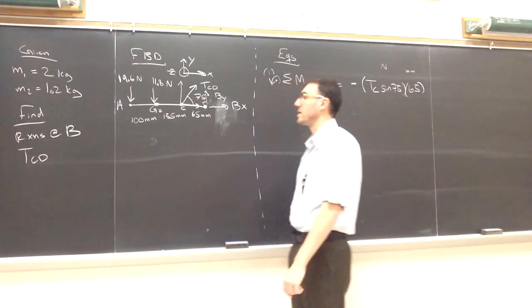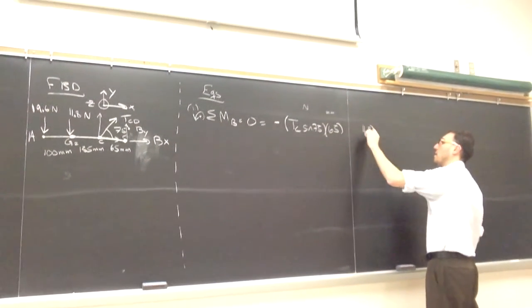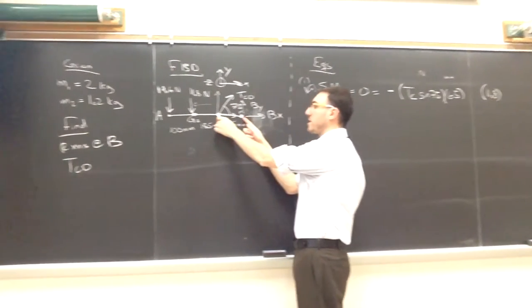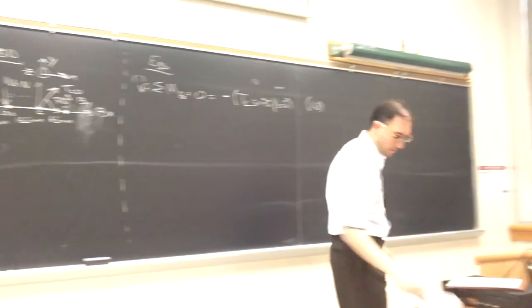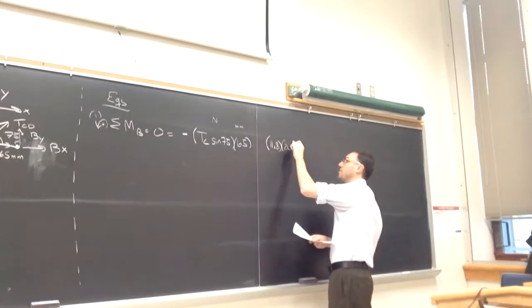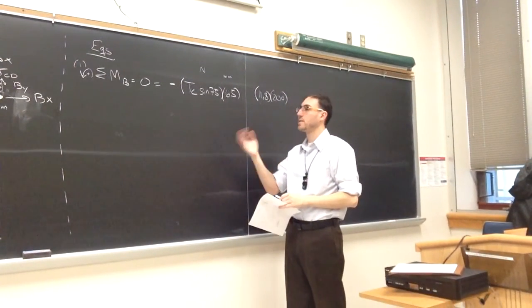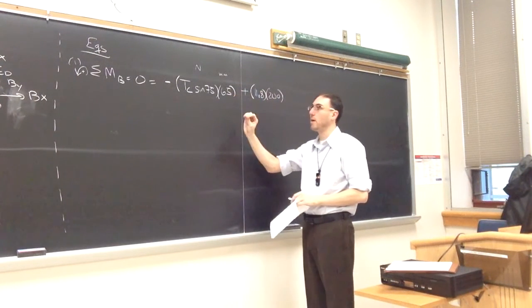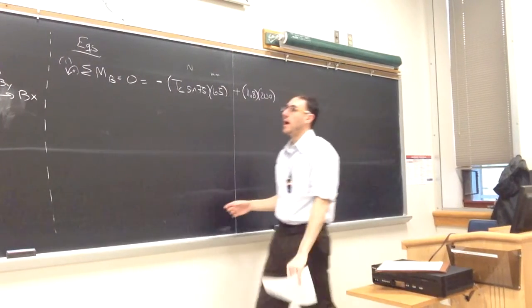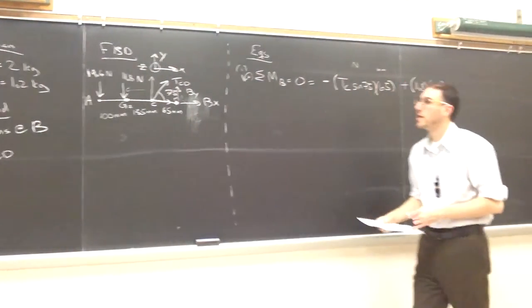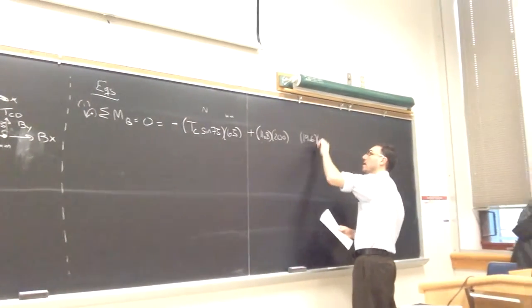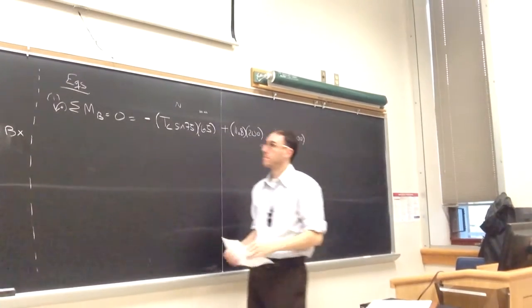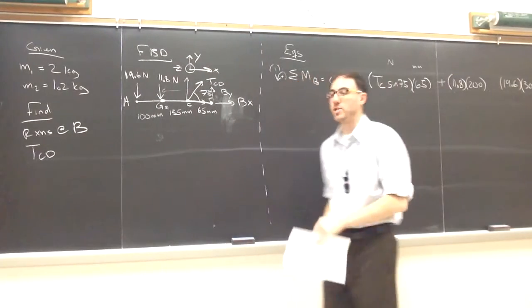So that takes care of TCD. Marching along, the next force we encounter is the 11.8 newtons. It's already completely vertical, so we want to find its distance from point B will be the 65 plus the 135, so it's 200 millimeters away from point B. And the last force we encounter is from the extreme beverage, 19.6 newtons. And from B, that is going to be a distance of 300 millimeters. It's also going to be acting counterclockwise around B, so this too will be positive.